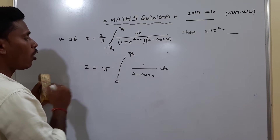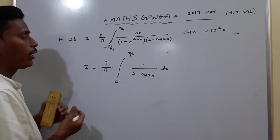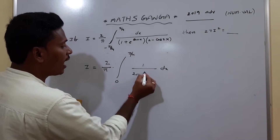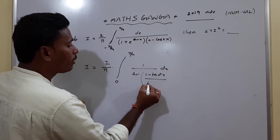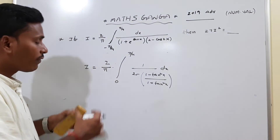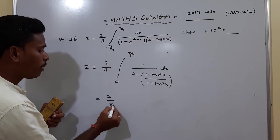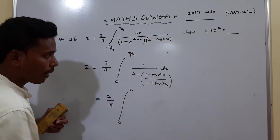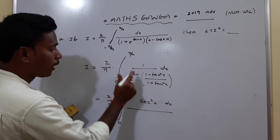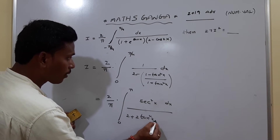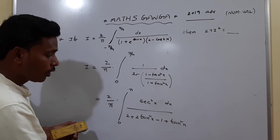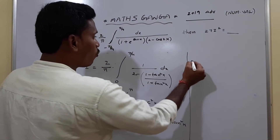After canceling the 2, I equals 2 by π of the integral from 0 to π/4 of 1 by (2 minus cos 2x) dx. To solve this, we rewrite cos 2x as (1 minus tan²x) divided by (1 + tan²x), using the standard formula. On simplification, the numerator becomes (1 + tan²x), which is sec²x, and the denominator becomes 2 plus 2tan²x minus 1 plus tan²x.